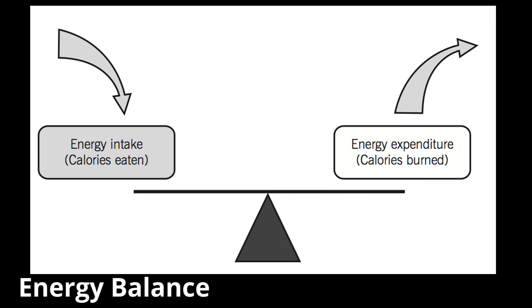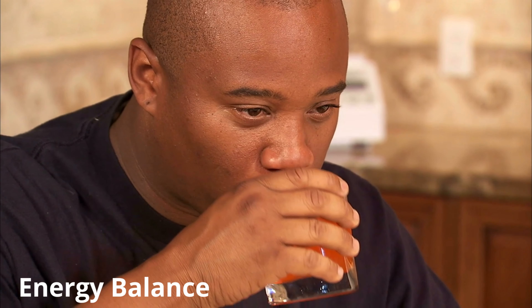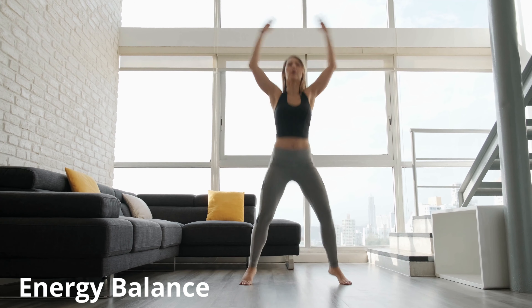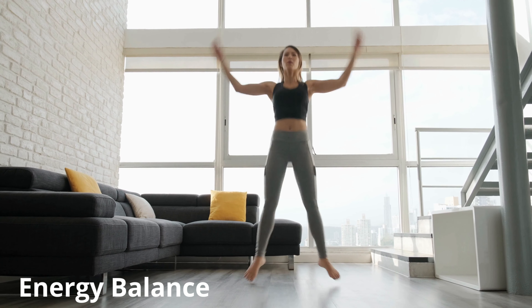In order for a sports performer to move towards their optimum weight for their sport, they have to consider energy balance. Energy balance is how many calories we take in versus how many calories we burn off. If these numbers are the same, we'll maintain our weight. If we take in more calories than we burn, we gain weight. If we eat less and exercise more, burning off more calories than we take in, we start to lose weight.